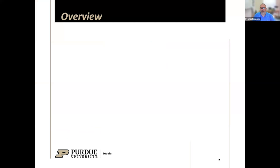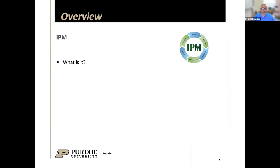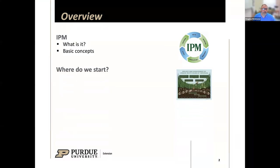Let me talk a little bit about an overview for this presentation. I'm going to start out by talking about this idea of IPM — integrated pest management — and what it is, especially in turf grass management. From there I'll share some basic concepts and go into some details on a few of those concepts so that we're all on the same page in terms of the language I'm using. Then I'm going to jump into how we get started on building an insect management program.